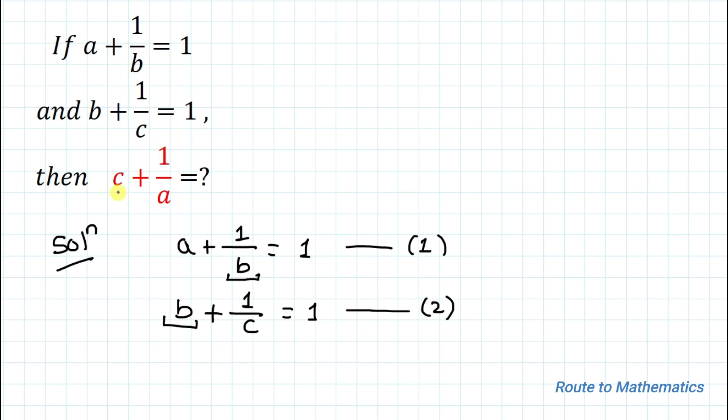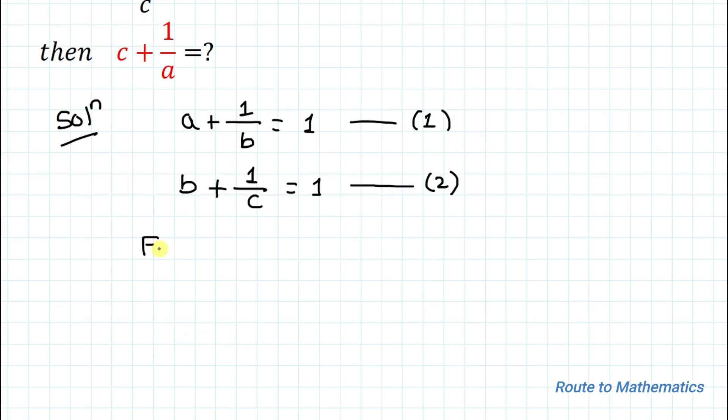We need to find the value of c and a from these equations so that we can add and find the answer. We'll find the value of a in terms of b, and from the second equation we'll find the value of c in terms of variable b. So from equation 1, we have a + 1/b = 1.